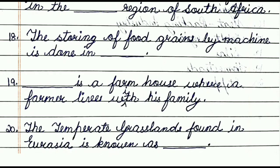Question number nineteen: dash is a farmhouse where a farmer lives with his family. The answer is homesteads. Question number twenty: the temperate grasslands found in Eurasia is known as dash. The answer is steppes.